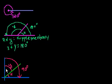And so what do we know about x plus y? Well, x plus y is going to equal 90 degrees. Or we could say that x and y are complementary.